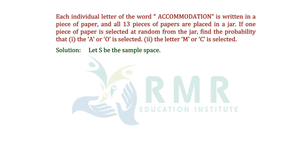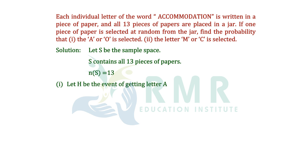Solution: Let S be the sample space. S contains all 13 pieces of paper, so N(S) = 13. For the first part, let H be the event of getting the letter A. So N(H) = 2. P(H) = N(H) / N(S), that is 2/13.